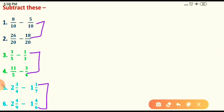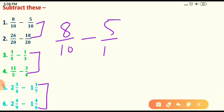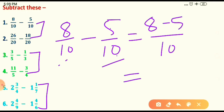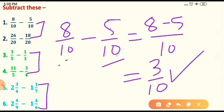The first type is subtraction of fraction numbers with the same denominator. The first question is 8 upon 10 minus 5 upon 10. Step 1: check the denominators — they are equal, so go to step 2. Step 2: subtract the numerators — write 8 minus 5 upon 10, which gives 3 upon 10. Step 3: convert to simplest form — 3 and 10 share no common factor, so 3 upon 10 is the final difference.